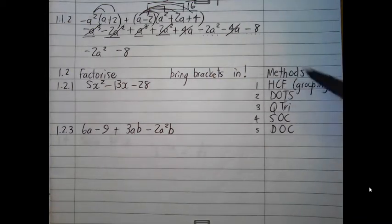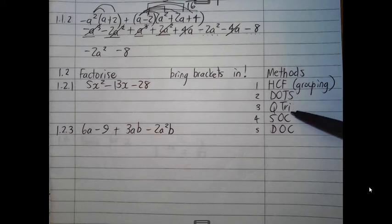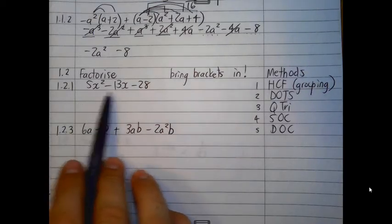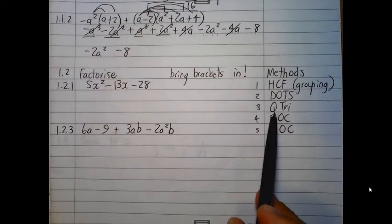Moving to question 1.2, the heading here involves factorizing. Now, factorizing questions here often involve bring brackets in, or make the brackets return to the question where the first part times the brackets out. And the methods that are at your disposal here are highest common factor, which includes grouping, difference of two squares, quadratic trinomial, sum of cubes, and difference of cubes.